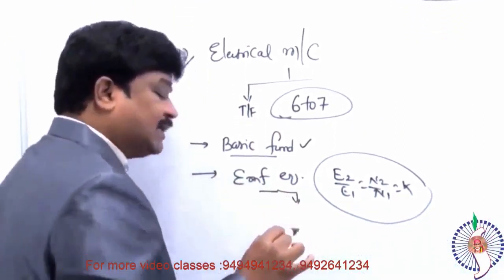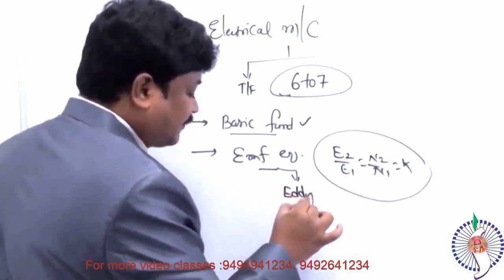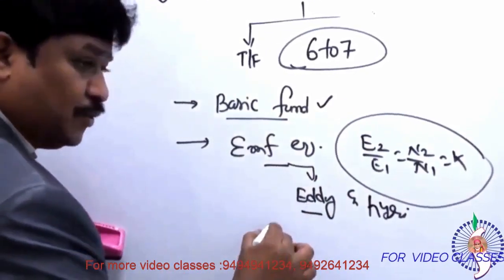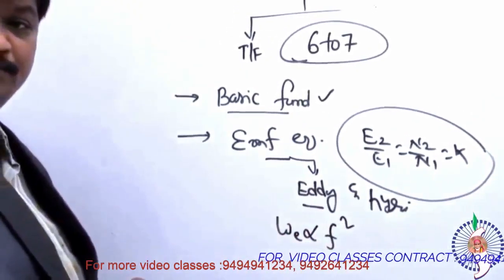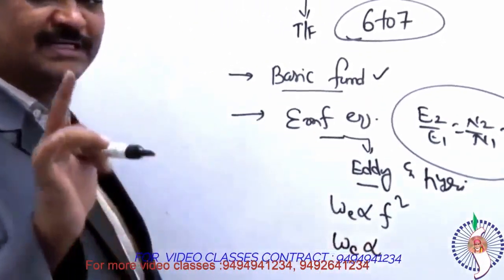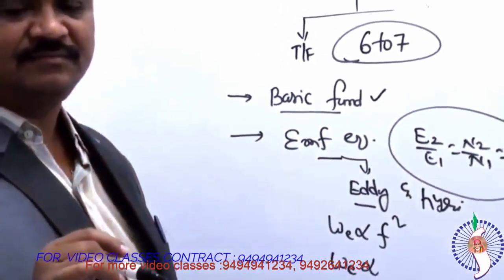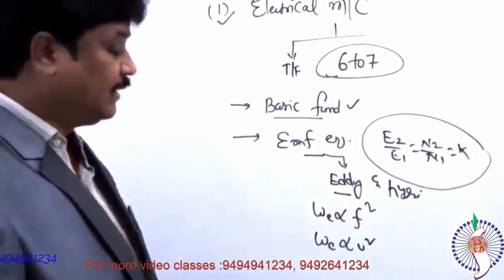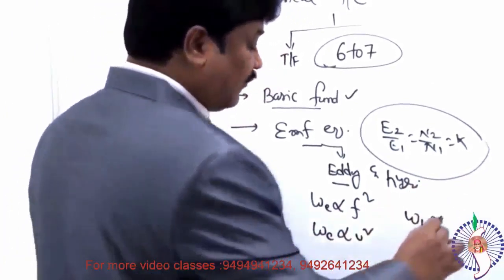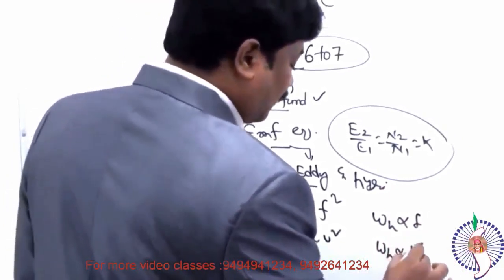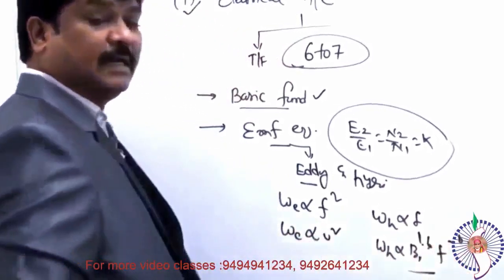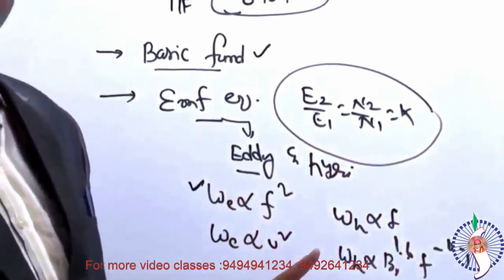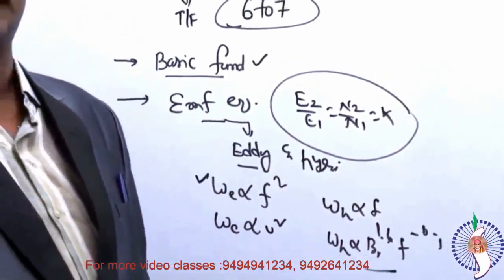Also concentrate on eddy current and hysteresis losses. Eddy current losses are sometimes directly proportional to f² and sometimes proportional to V² — know when each condition arises. Hysteresis losses are directly proportional to frequency f and to Bmax to the power of 1.6, with f to the power of minus 0.6. Try to do at least five to six problems based on V/f constant and V/f not constant conditions.